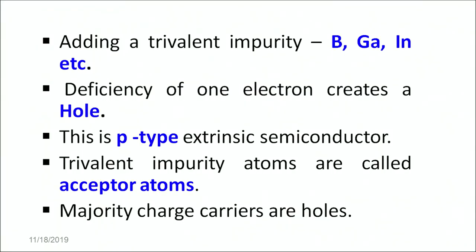We have taken a silicon lattice and added a trivalent impurity like boron, gallium, or indium. The deficiency of one electron creates a vacancy or a hole, making the extrinsic semiconductor p-type. It is this hole which travels from one end to the other. This type of extrinsic semiconductor is called a p-type extrinsic semiconductor, and the majority carriers in this p-type semiconductor are holes. There are two distinct kinds of semiconductors: intrinsic and extrinsic. And there are two distinct kinds of extrinsic semiconductors: n-type and p-type.